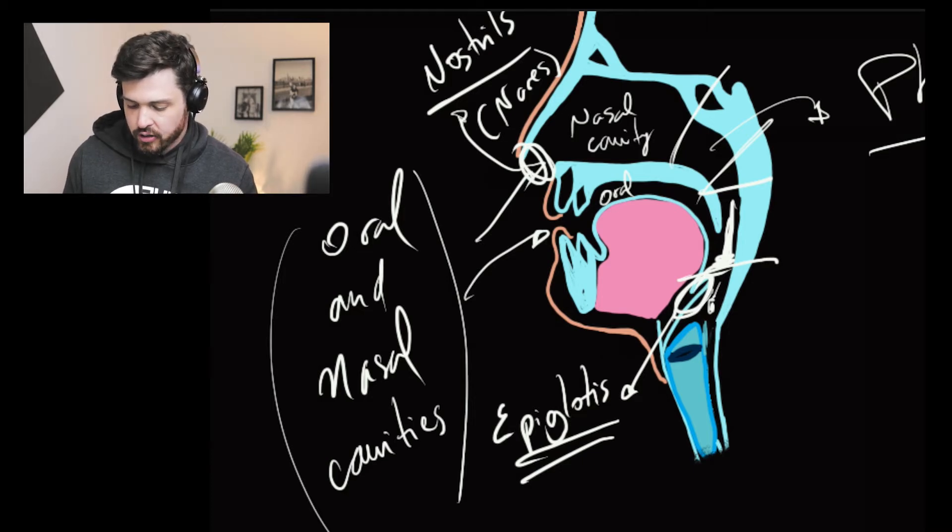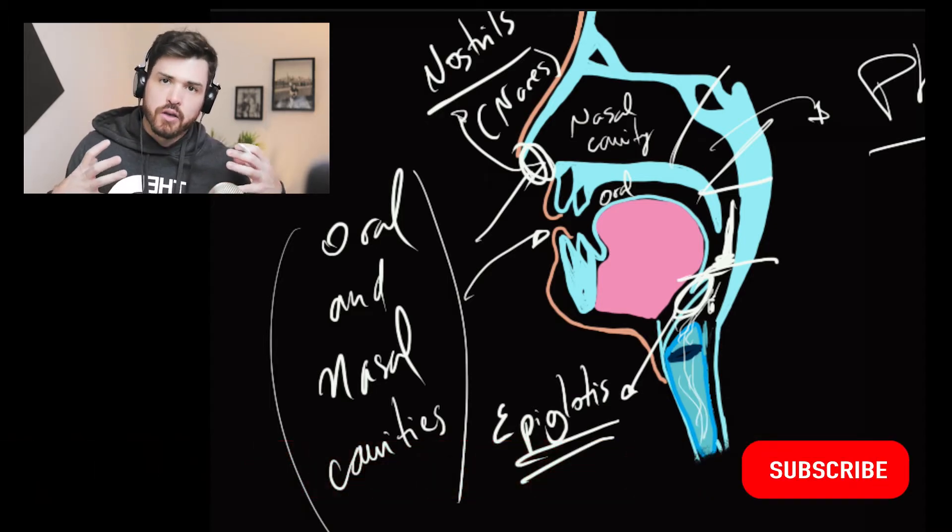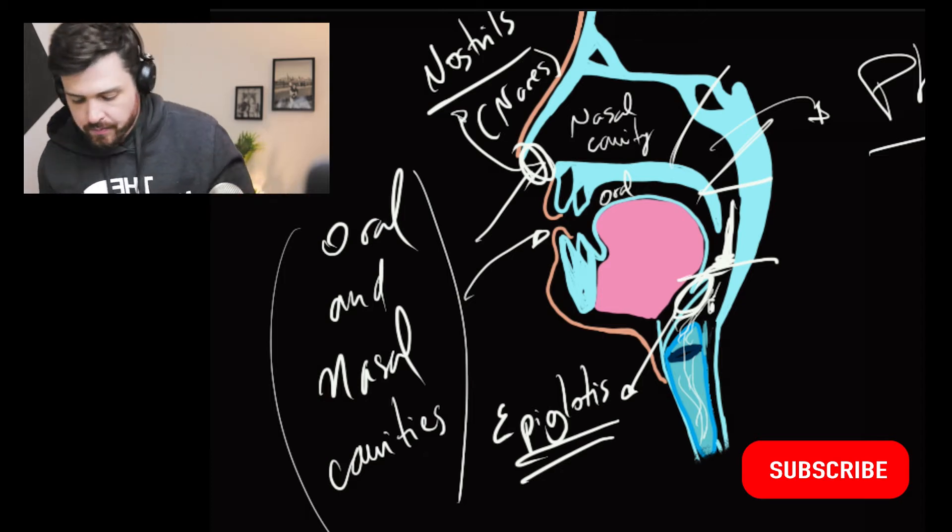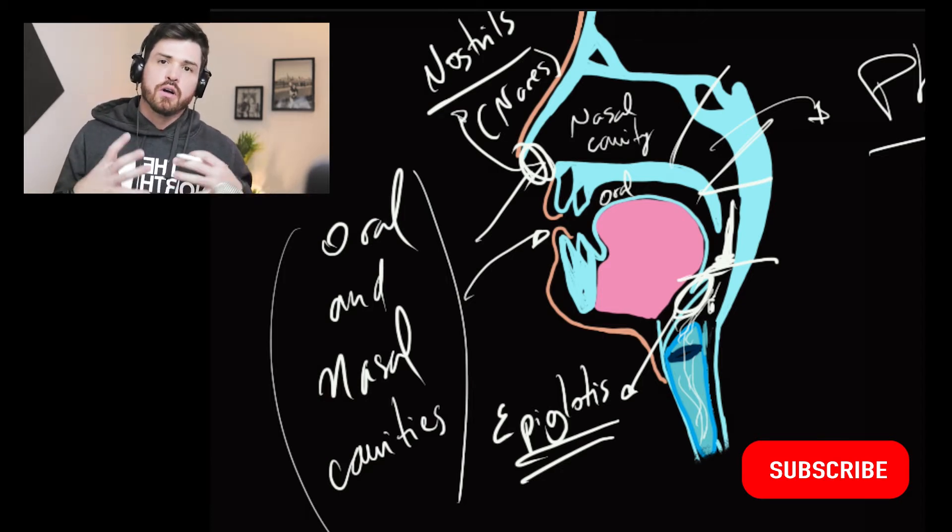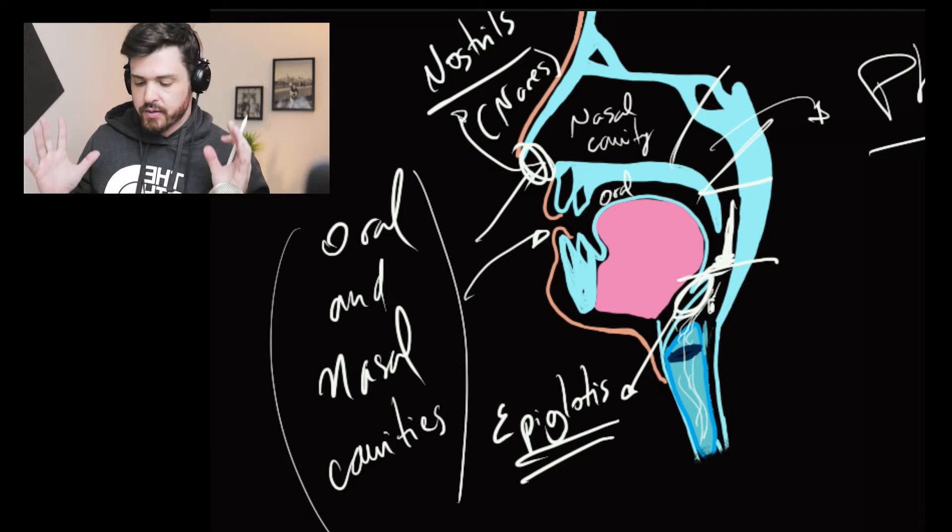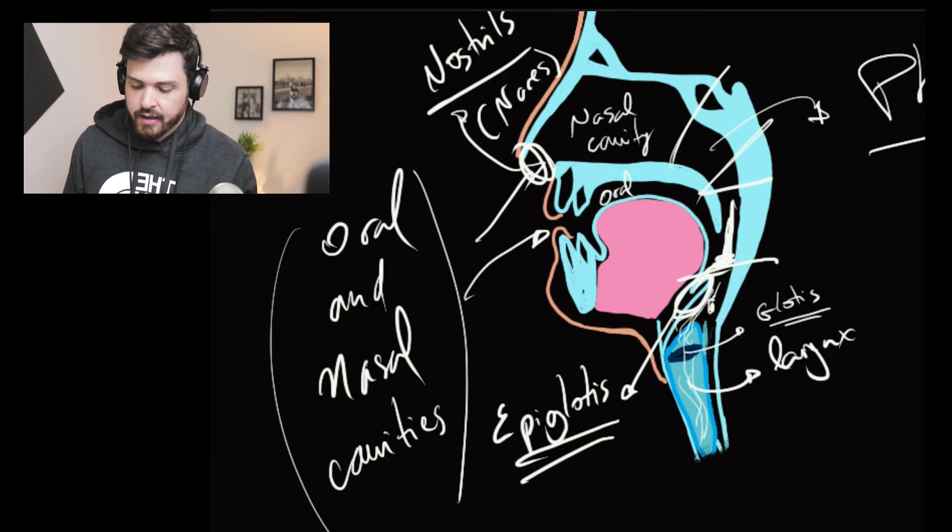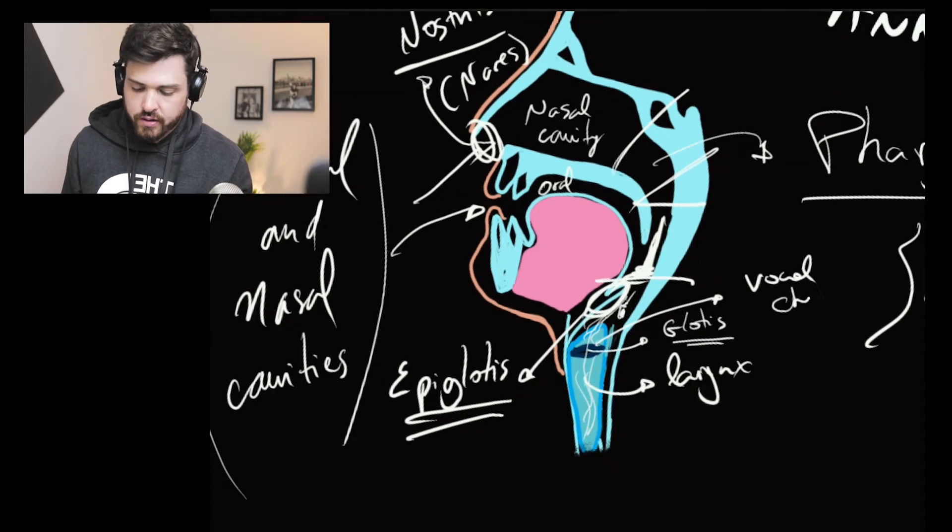A partir daqui, mais anteriormente, more anteriorly, we have the beginning of the lower respiratory tract. Às vezes, ele também é considerado upper respiratory tract, but this is the larynx. Essa parte aqui é larynx, a parte subglótica. This is the glottis. E por aqui estão the vocal cords.